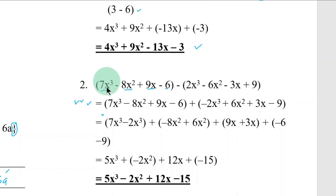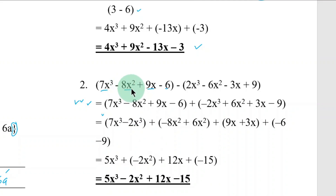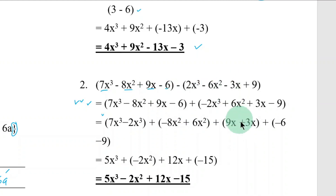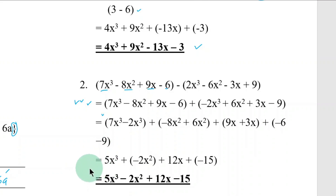Combining like terms again: 7x cubed goes with 12x cubed, but since there's a negative sign, it becomes minus. Then negative 8x squared — its partner, since negative 2 times negative gives positive 3x squared. Then plus 9x, so positive 3x. Then the constants: negative 6 and negative 9, simplified to negative 9. Final answer: 5x cubed minus 2x squared plus 12x minus 15.